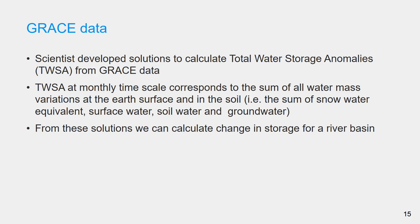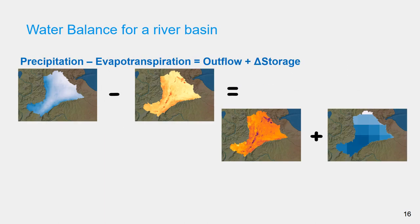From these solutions, we can calculate change in storage for a river basin. If you are interested to know more about GRACE data, some references are listed for you to read in the reference list. Once we have data for the components of the water balance equation, we can calculate the water balance. If we have reliable measurements of outflow from the basin, we can evaluate if the water balance can be closed or not using data from remote sensing products.